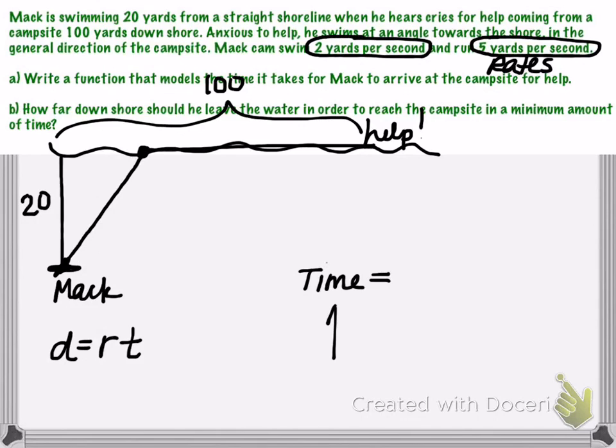If we ultimately want to write a time equation, then if we solve for time, we would divide both sides of this equation by the rate. And we'll have that the time can be found by taking the distance divided by the rate. That's going to be important since we're ultimately looking for a function that models time.